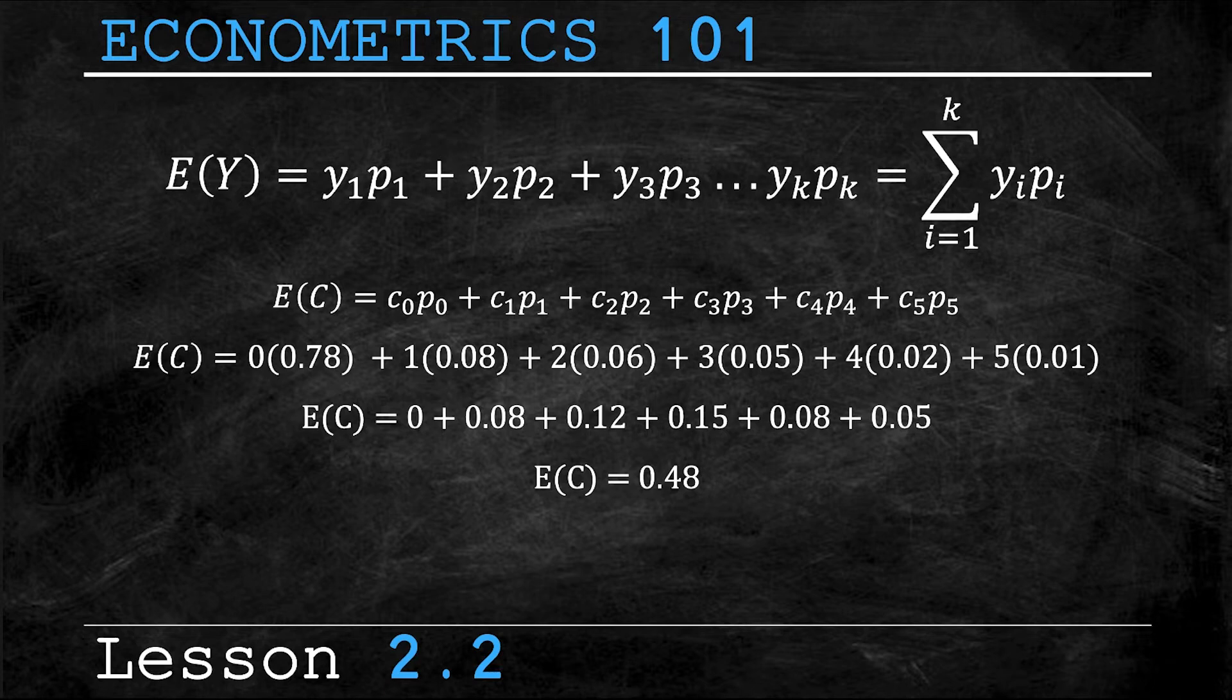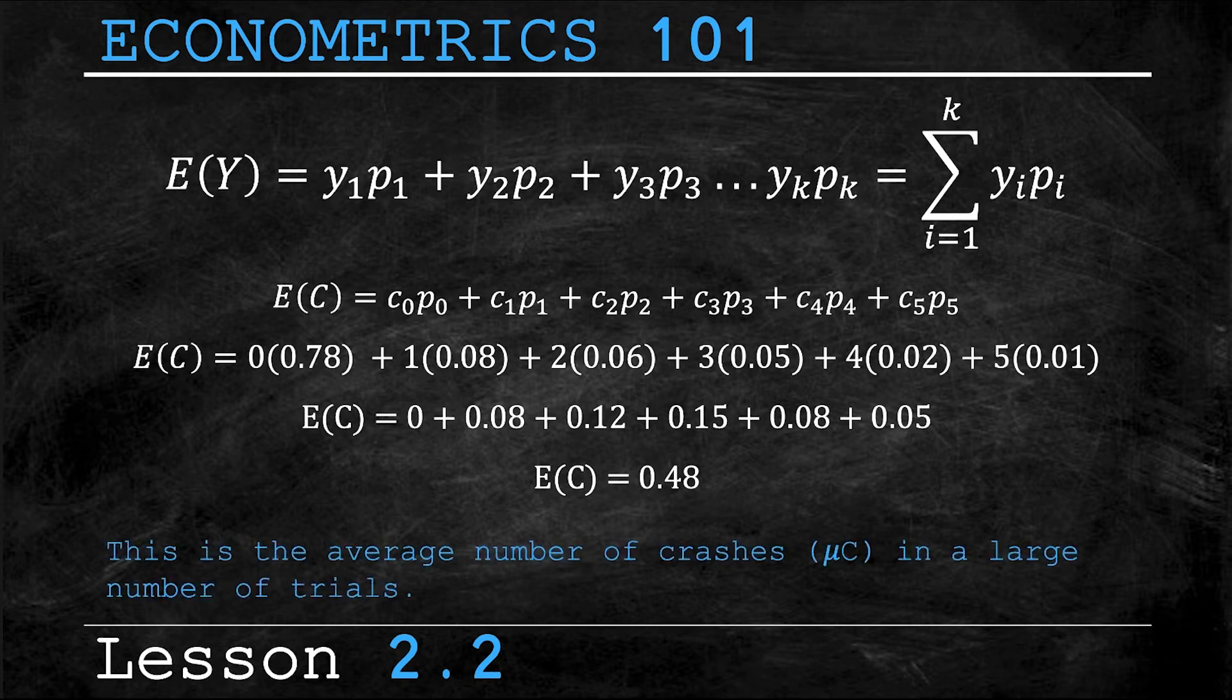But how do you interpret that value? What does it actually mean? We already said that the number of crashes must be an integer. So how can you have 0.48 crashes? Well, it essentially means that if you were to perform a very high number of trials, the average number of crashes in all of those trials would be 0.48 crashes. That's how you would interpret this 0.48 value.